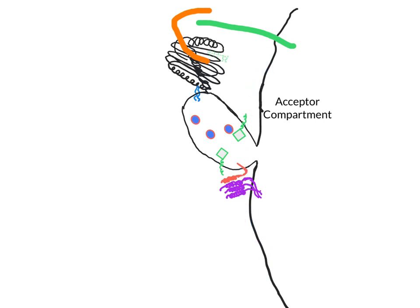Ultimately, the RAB is recycled by hydrolysis of GTP to GDP, which causes the hiding of the lipid tail. This releases the GDP-bound RAB back into the cytosol for another round of vesicular transport. I hope that helps your understanding of RABs and GTPases — have a great day.